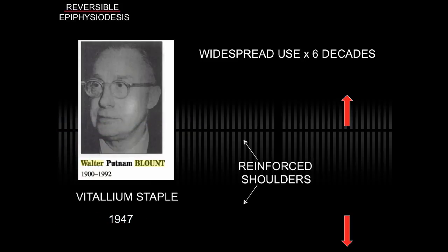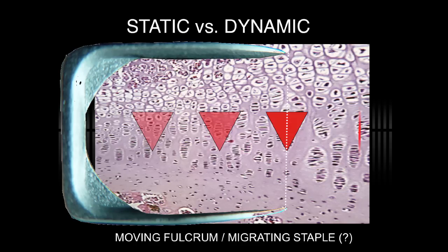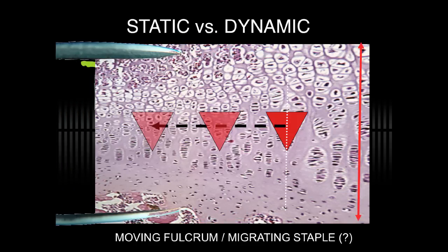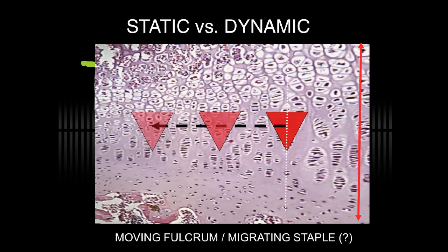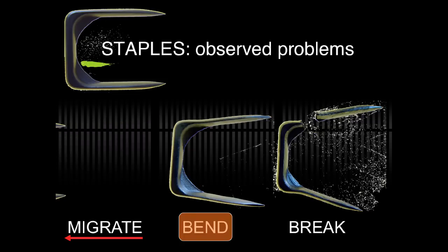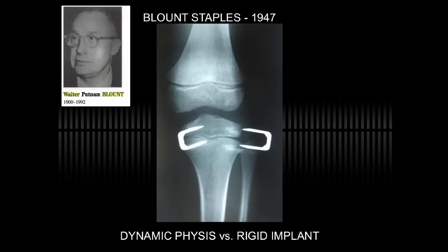Dr. Blount introduced the vitalium staples with reinforced shoulders, but the staples could migrate as shown. Nevertheless this was the only option and was in widespread use for several decades. The problem is that the rigid staple opposed to the dynamic physis will typically fail by bending, breaking, or migration, and this is possible with any rigid implant placed around or across the physis. The Blount staple shown here migrated after six months of placement, requiring repeat surgery.